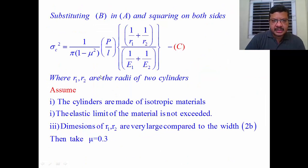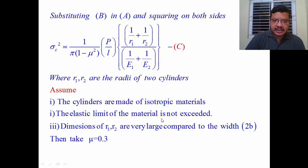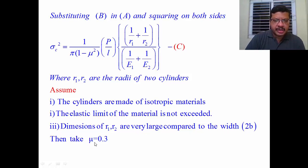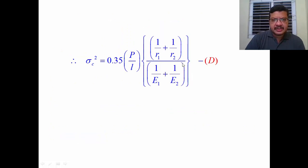After substituting the equation for b into the contact stress equation, and taking the following assumptions — the cylinders are made of isotropic materials (all properties remain constant in all directions), the analysis is within the elastic limit, dimensions R1 and R2 are very large compared to total deformation 2b — and taking Poisson's ratio μ = 0.3 and substituting this value, the equation with respect to cylinders is obtained.